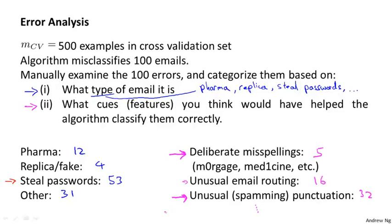This sort of error analysis — the process of manually examining the mistakes that the algorithm makes — can often help guide you to the most fruitful avenues to pursue. This also explains why I often recommend implementing a quick and dirty implementation of an algorithm. What we really want to do is figure out what are the most difficult examples for an algorithm to classify. Very often, for different learning algorithms, they'll find similar categories of examples difficult. A quick and dirty implementation is often a quick way to identify some errors and what the hard examples are, so you can focus your efforts on those.